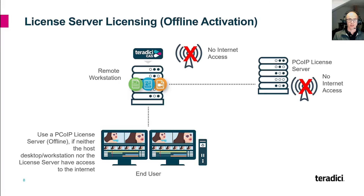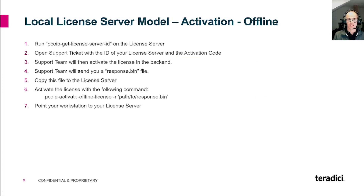Now let's have a look at the offline activation method. This method is used in a completely locked-down environment. We refer to this as a dark site, meaning that no machines in the network have access to the internet. To activate the license here, you have some manual tasks to complete first.